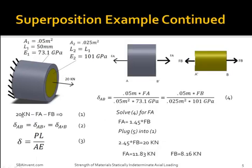Now that I have two equations defined to solve for force FA and force FB, I can take the deflection equation for an axially loaded member, plug it into equation 2, and then use algebra to solve for the two forces. When I am done, I get force FA equals 11.83 kN and force FB equals 8.16 kN.